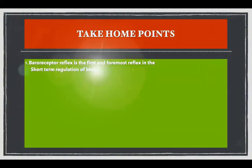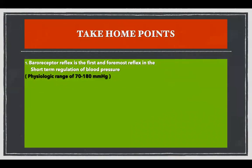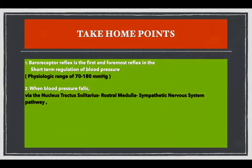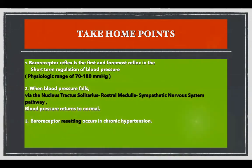The baroreceptor reflex is the first and foremost reflex in the short term regulation of blood pressure, operating within a physiological range of 70 to 180 millimeters of mercury. When blood pressure falls, via the nucleus tractus solitarius, rostral medulla, and sympathetic nervous system pathway, blood pressure returns to normal. Finally, baroreceptor resetting occurs in chronic hypertension.